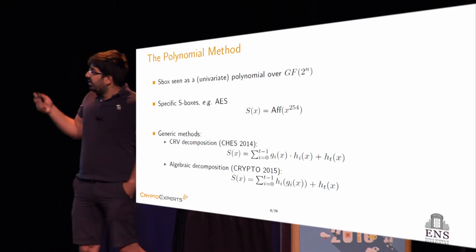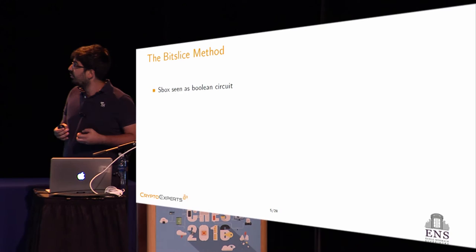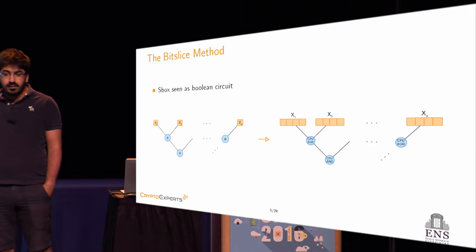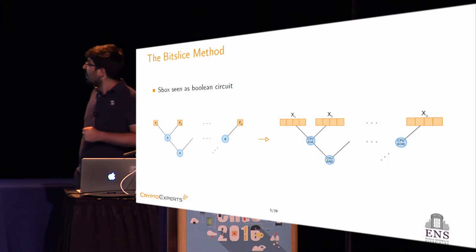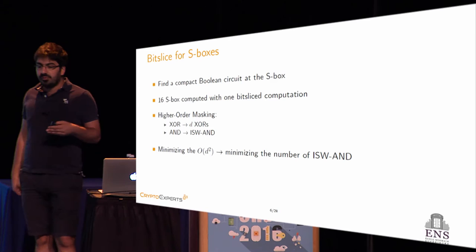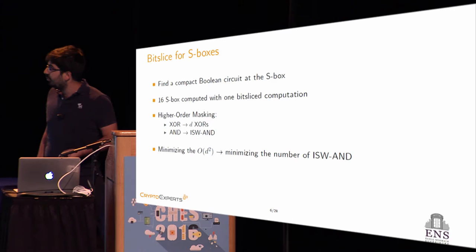A slightly less known approach called the bit-slice approach can be used to evaluate S-boxes. You look at the S-box as a Boolean circuit: starting from an N-bit input circuit composed of logical gates, you transform it into N circuits of one bit where each logical gate is replaced with a CPU instruction and you can pack several bits into a register. To apply this at the S-box level, you need to find a compact Boolean circuit — specifically one with a minimal number of AND gates, since these are the main cost. For AES, at each round you need to perform 16 S-box computations, which can be done with only one bit-slice computation.